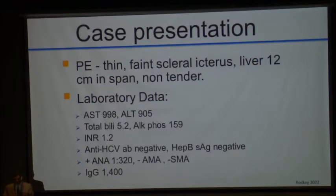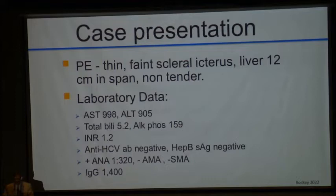The laboratory data showed AST and ALT elevations. Total bilirubin was 5.2, alkaline phosphatase 159, INR 1.2. Hepatitis C antibodies were negative. Hepatitis B surface antigen was negative. Positive ANA; AMA and SMA were negative, and IgG was 1,400.